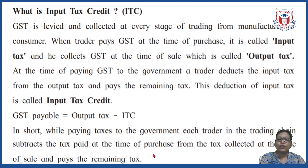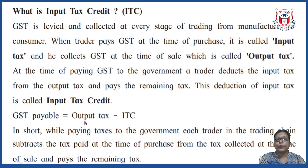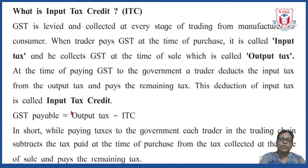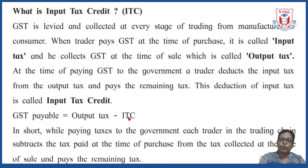In short, while paying taxes to the government, each trader in the trading chain subtracts the tax paid at the time of purchase from the tax collected at the time of sale and pays the remaining tax. That is why GST payable equals output tax minus ITC. This formula is very important. Now we are starting with Practice Set 4.2.